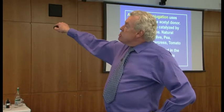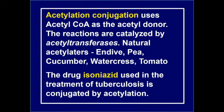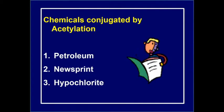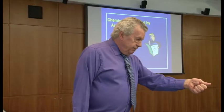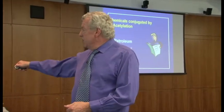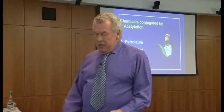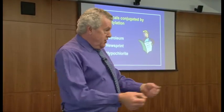The fourth pathway is acetylation, which uses acetyl-CoA — something made in the Krebs cycle, in the process of making energy between glycolysis and the Krebs cycle. The reactions are catalyzed by acetyltransferase enzymes, which are naturally stimulated by endive, peas, cucumber, watercress, and tomatoes. These are people who can't tolerate petroleum smells — they can't go into garages and fill up without feeling very strange — and newsprint, where opening a newspaper makes their eyes begin to sting.